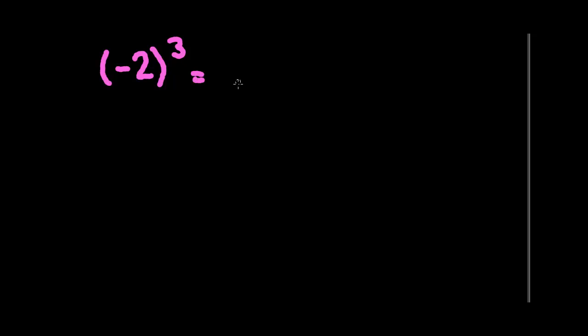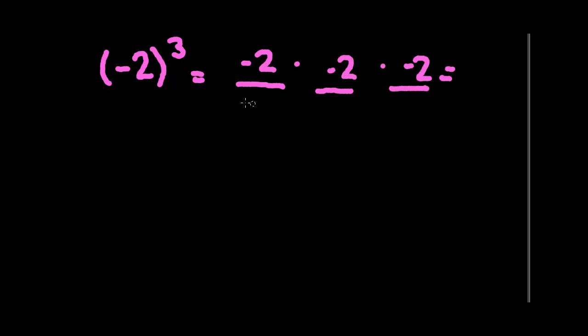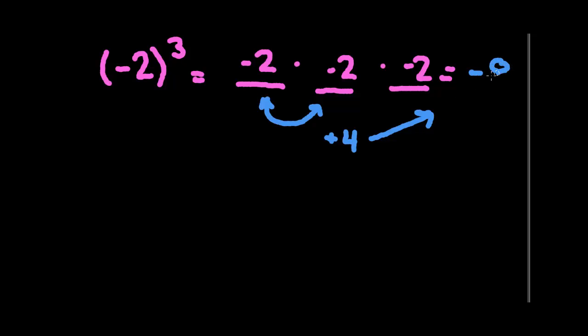So what happens when we have a negative number? A negative number is just put in parentheses. If we have negative 2 to the third, that means it's negative 2 times negative 2 times negative 2. Negative 2 times negative 2 gives us a positive 4, and then positive 4 times negative 2 gives us negative 8.